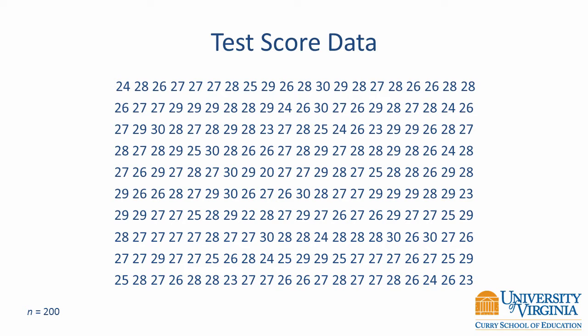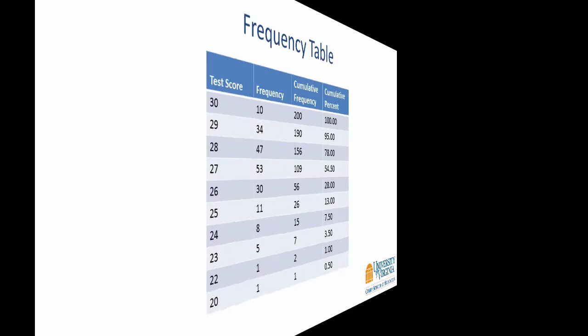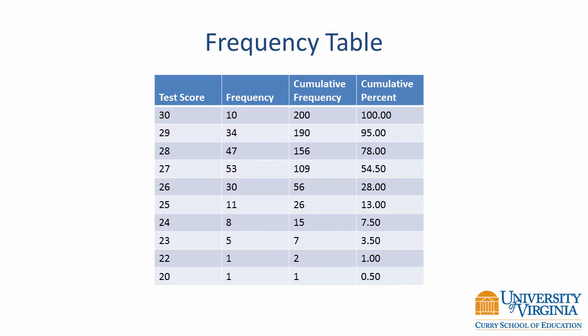One such way to summarize the information is to create a frequency table. The first column of this table shows the unique test scores listed in descending order. It is easy to see that the minimum score is 20 and the highest score is 30. This range of values seems limited. Moreover, no one in the sample obtained a score between 0 and 19. The second column of the table shows the frequency of each test score. The most common score was a 27, whereas very few people earned a score of 20 or 22.